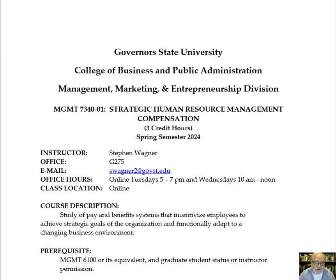At the top of the syllabus is the basic important information about the class identifying its name, then me as the instructor, my office information, and my email. My office hours are online because this is an online class, and so they will be on Tuesdays from 5 to 7 p.m. and Wednesdays from 10 a.m. to noon. You can access that through the Blackboard site in the Collaborate Ultra, or through the Instructor tab in the main menu.